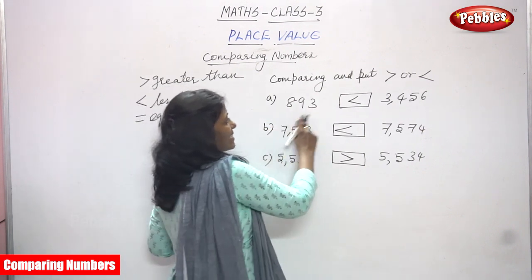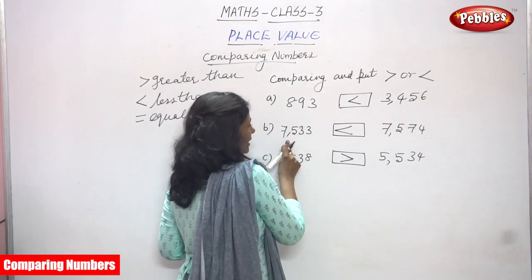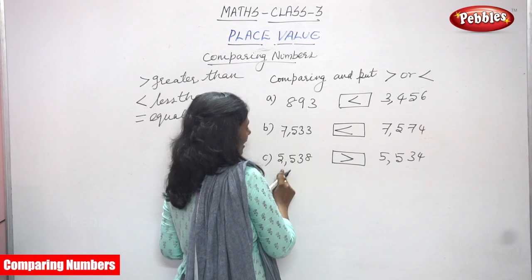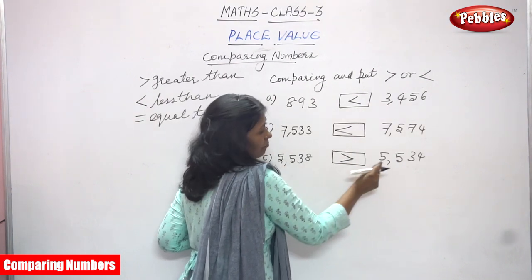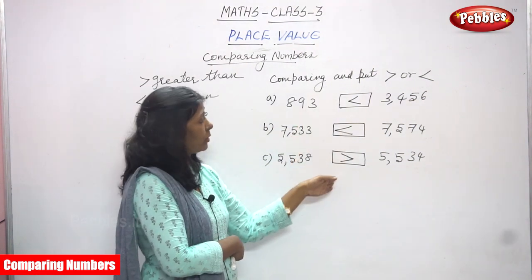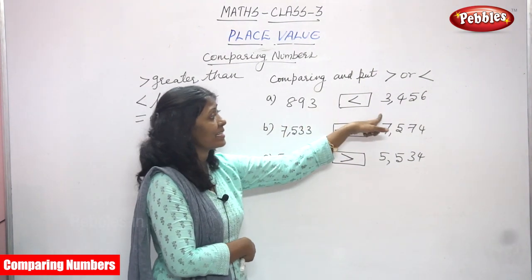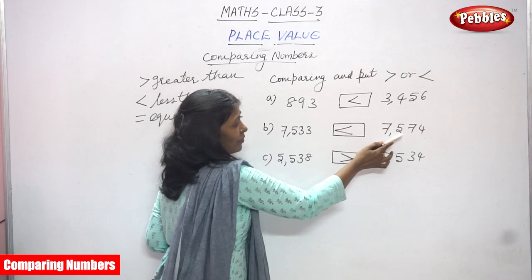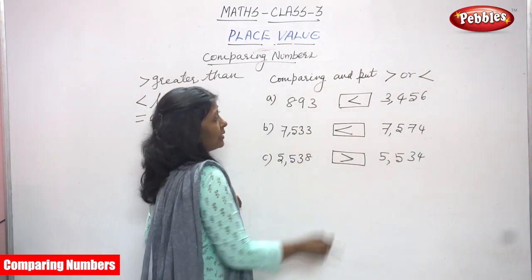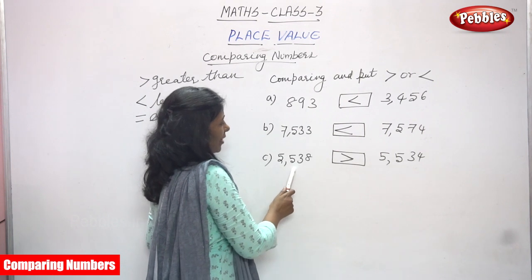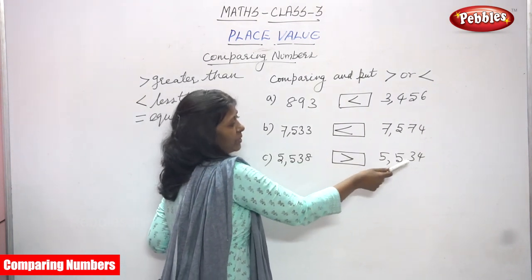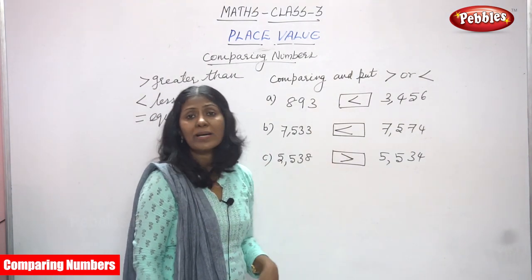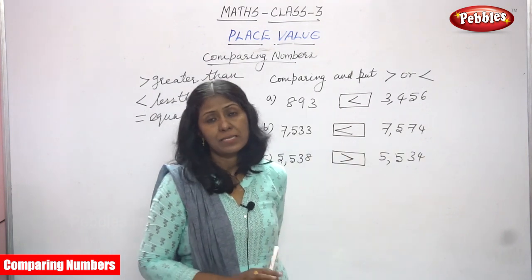So to summarize: 893 is less than 3456 — less-than symbol. Next, 7533 is less than 7574 — also less-than symbol, narrow mouth. And 5538 is greater than 5534 — greater-than symbol, wider mouth. These symbols are all correct. I think you understand the symbols now. Comparing numbers is complete.